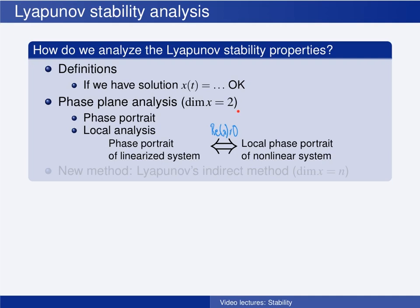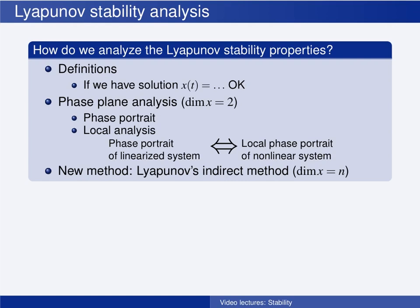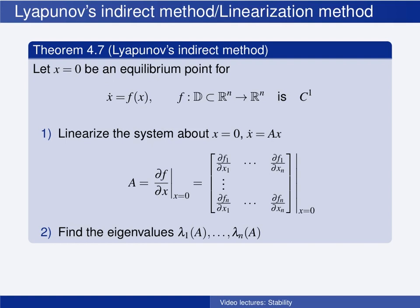This result only holds for two-dimensional systems, though. What if the system state has a dimension other than two? This topological equivalence between the behavior of a nonlinear system and its linearization, and the corresponding relationship between the stability of the equilibrium point, can fortunately be generalized to systems of any dimension. This is what Lyapunov's indirect method does.